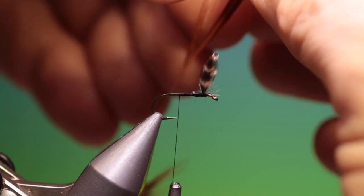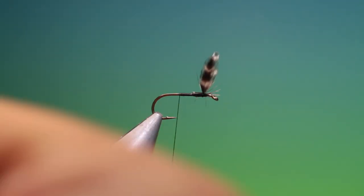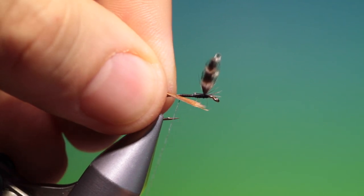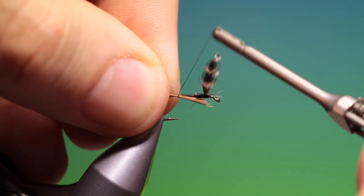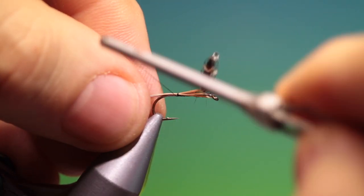Brown hackle, take the fibres, pull them off. I'll just tack that in with a couple of turns, see if it's the right length, that'll do me nicely.